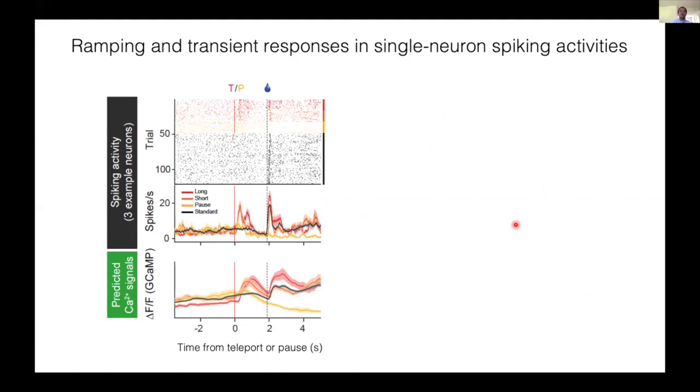We then asked whether ramping and transient responses are observed within a single neuron as predicted by the model. Using photometry signals, it is difficult to exclude the possibility that there are separate populations that signal either ramps or transients. This is the neuron that showed ramping up spiking activity, and this is more evident if the signal is convolved or predicted calcium signals. And this neuron showed transient excitation at the time of teleport.